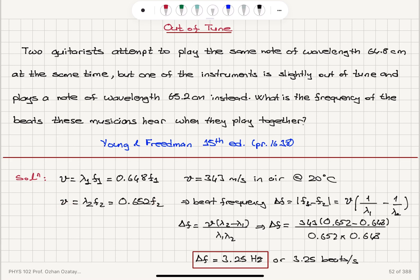since F is equal to V over lambda, is absolute value of F1 minus F2, which is V times 1 over lambda 1 minus 1 over lambda 2. Lambda 2 minus lambda 1 divided by lambda 1, lambda 2 times V is the beat frequency.